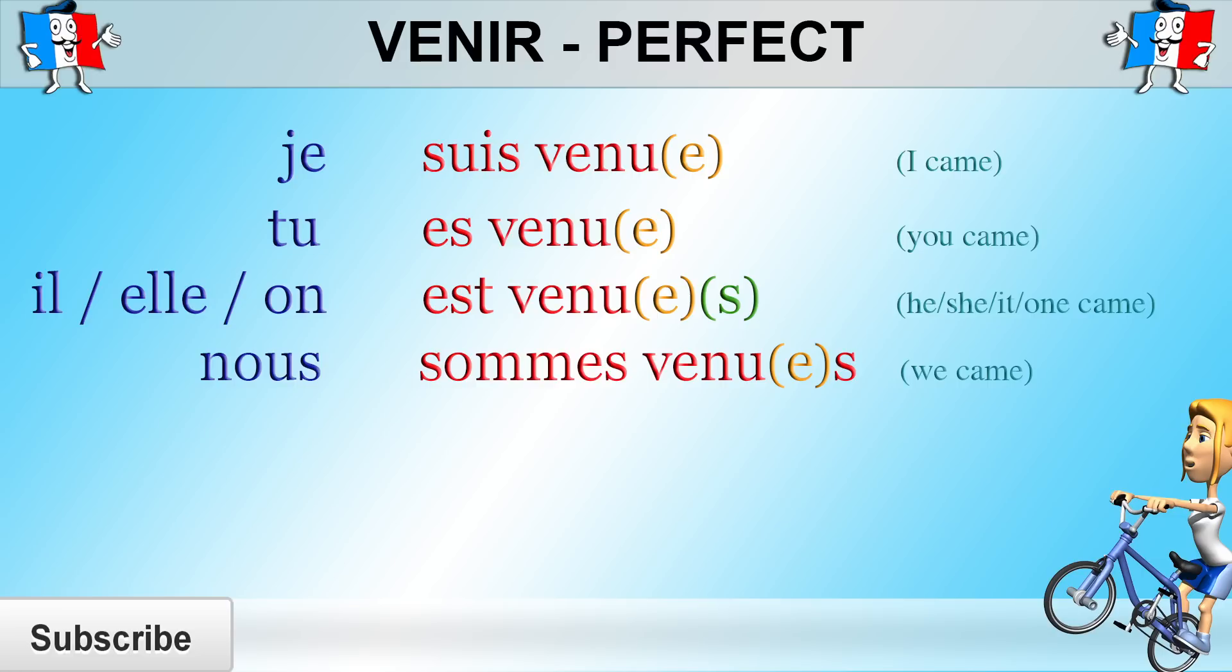Of course, nous is always plural, so the s is compulsory and you add the e if nous refers to girls. Vous êtes venu. Vous êtes venu. If vous refers to several people, you need to add the s. And if vous refers to just the one person, so if you're talking to your boss, for example, then you do not add the s.